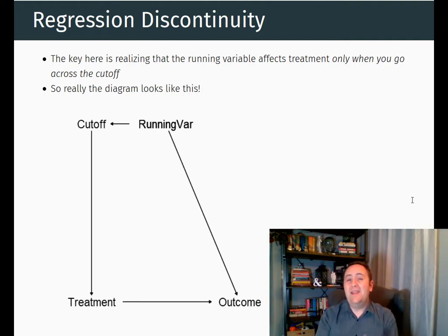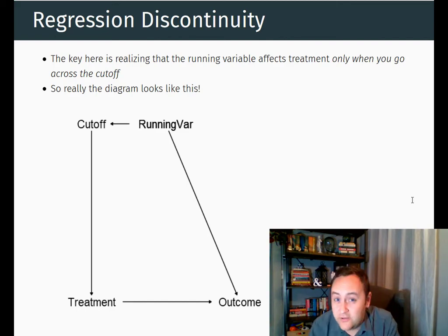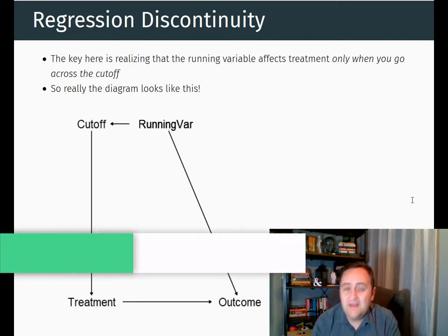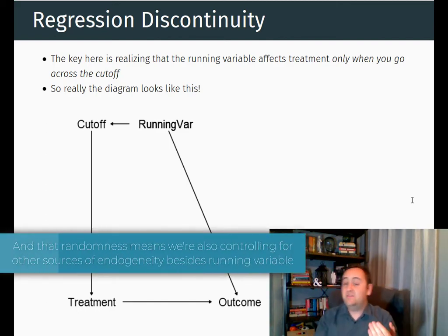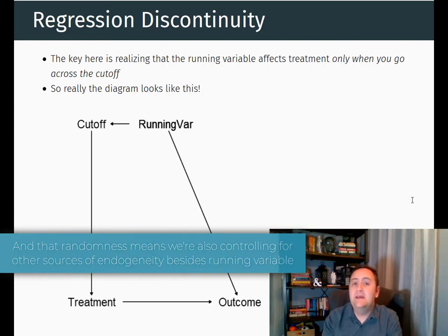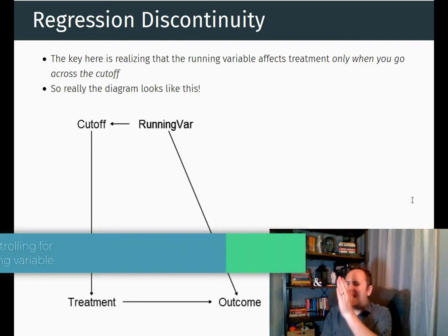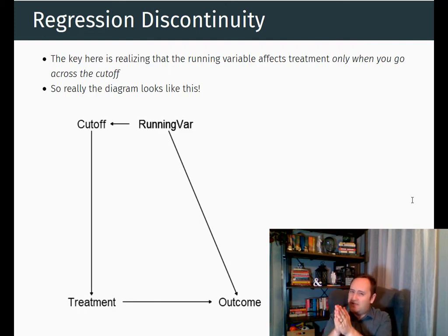But within a narrow window right around the cutoff, it's basically random whether you get the treatment or not. Somebody who gets a 30 on the test is probably very different from somebody who gets an 85. But somebody who gets an 89 versus somebody who gets a 91 — those are very similar people.